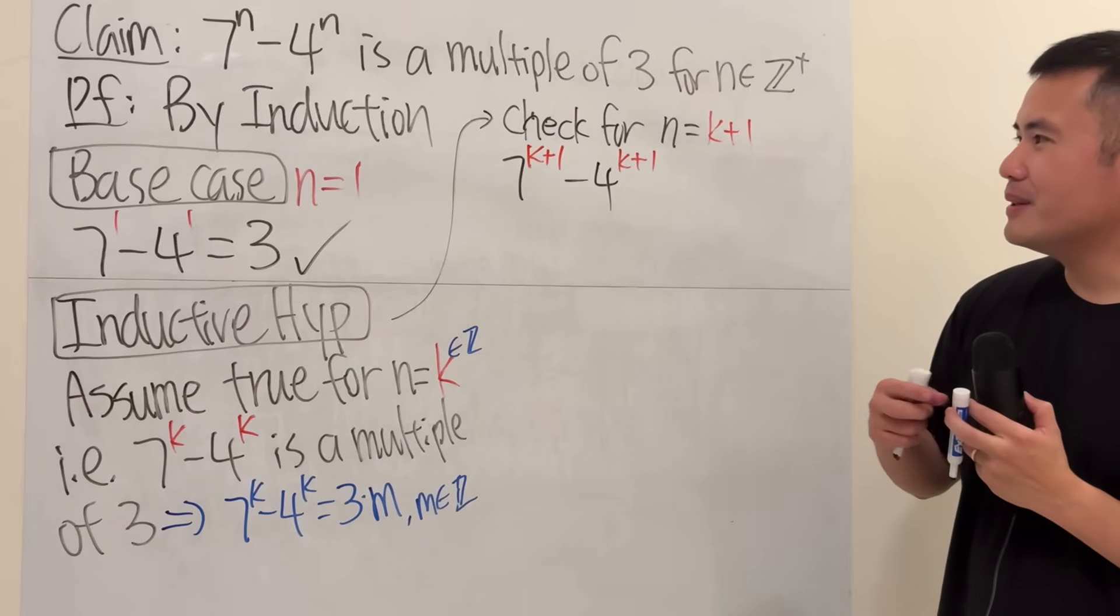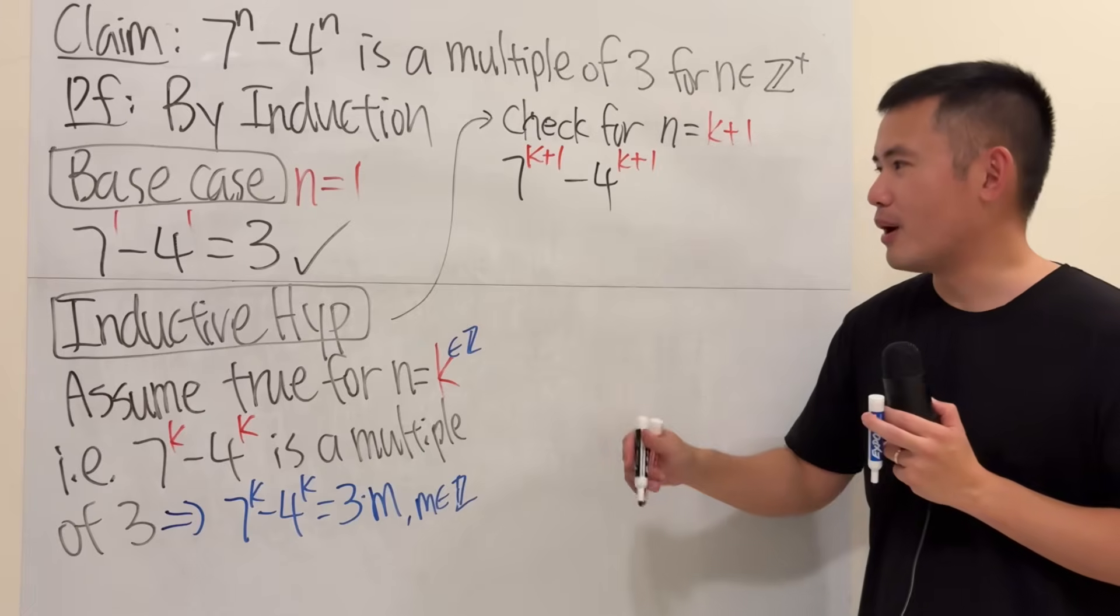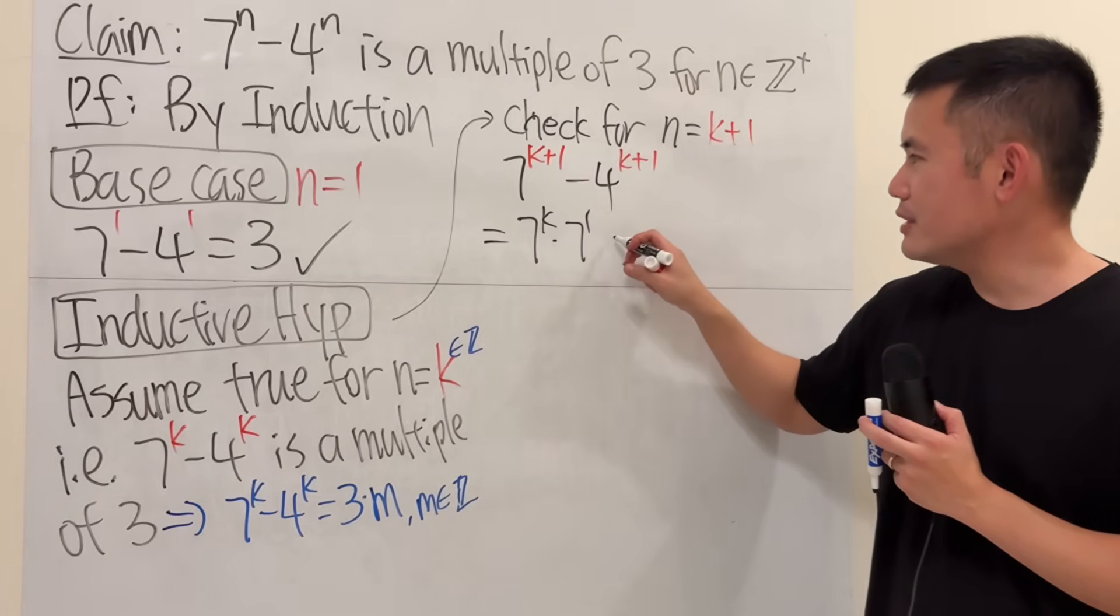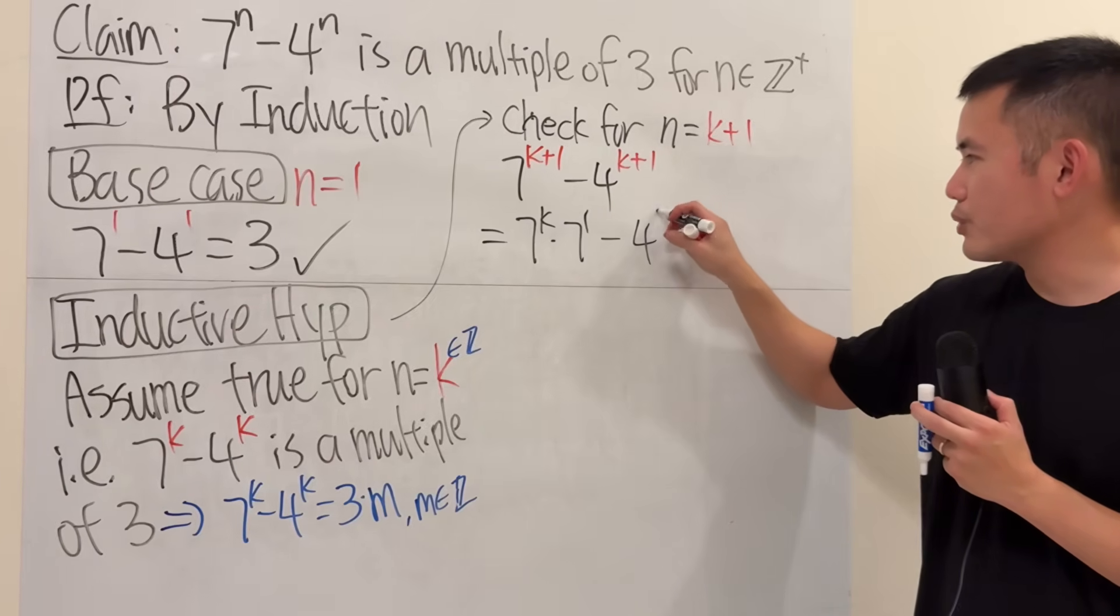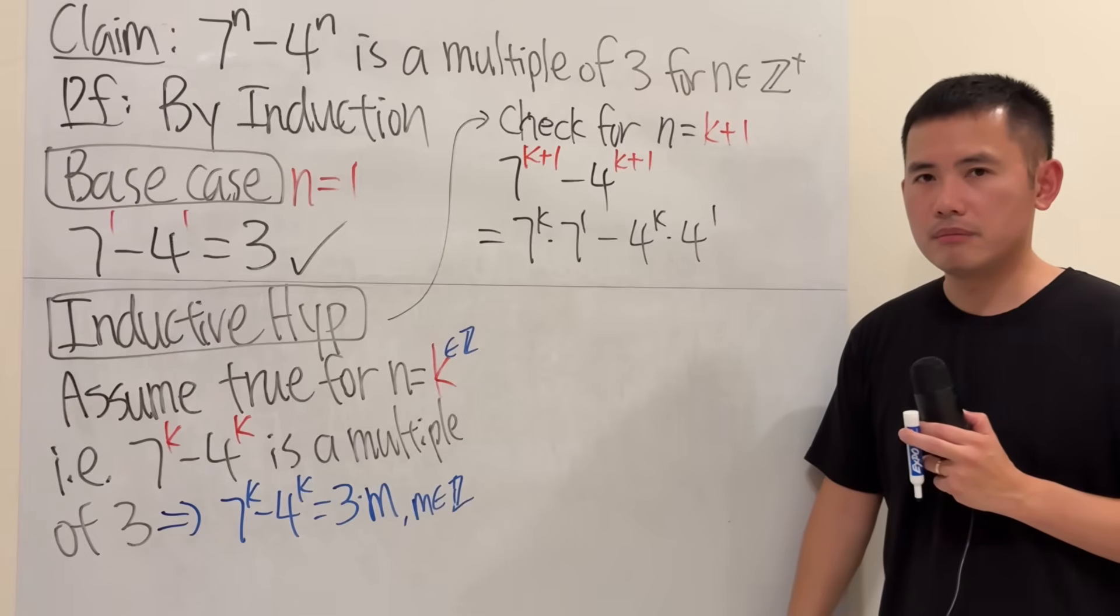What can we do next, though? Well, we can work out some exponents. When you have a sum of exponents, you can break it apart. This is the same as 7 to the k times 7 to the 1st, and then this is the same as 4 to the k times 4 to the 1st. Good. But now what?